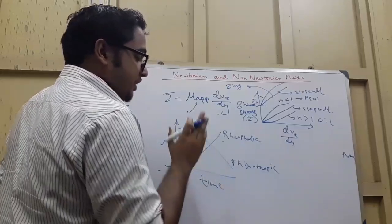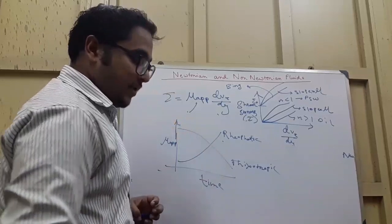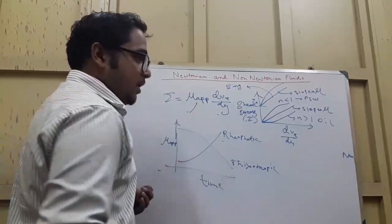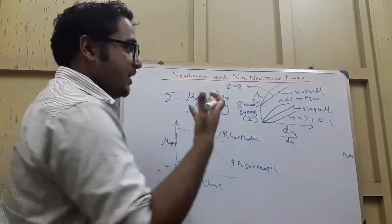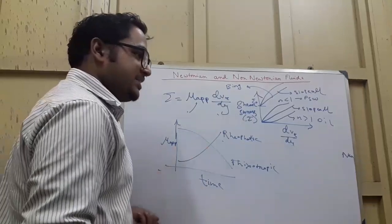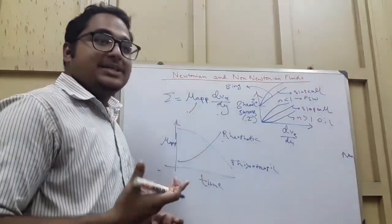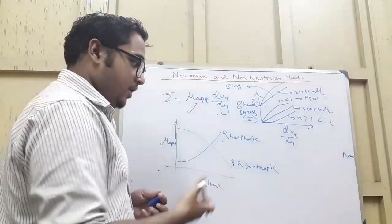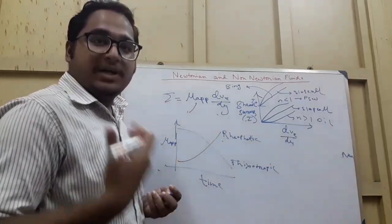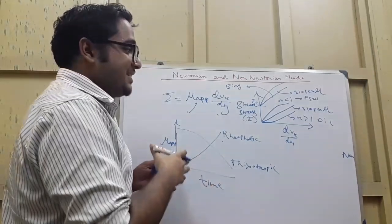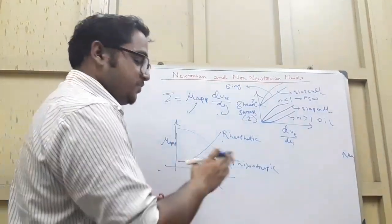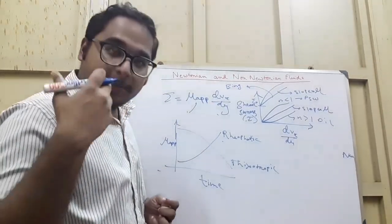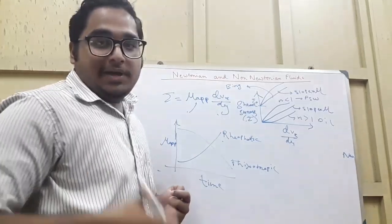So we have seen how Newtonian and non-Newtonian fluids behave, how viscosity increases or decreases with shear strain rate and with time, and the types: dilatant, pseudo-plastic, Newtonian, Bingham plastic, and Bingham pseudo-plastic (Casson). For further detail, refer to Fox & McDonald's Fluid Mechanics or NPTEL lectures. Please like, share, subscribe, and hit the bell icon. Thank you.